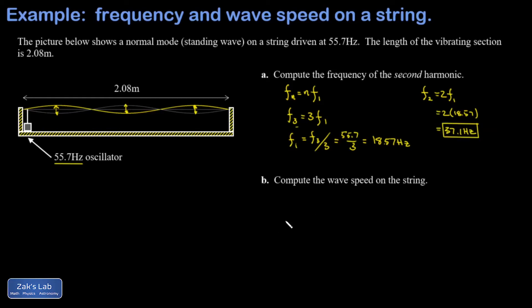In part B, we're asked to find the wave speed on the string, and we're going to use the wave speed equation for this: v equals f lambda. I'll post a link to where that was derived as well. We have some choice here—we can use any one of the normal modes that we want to compute the wave speed.